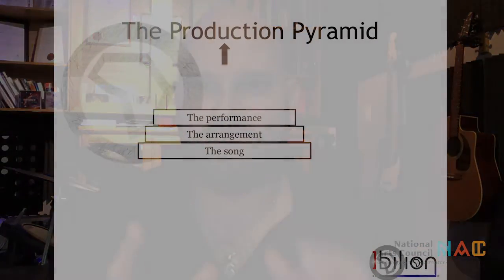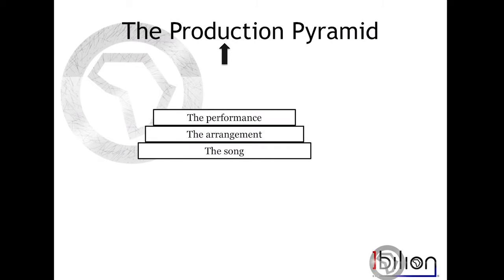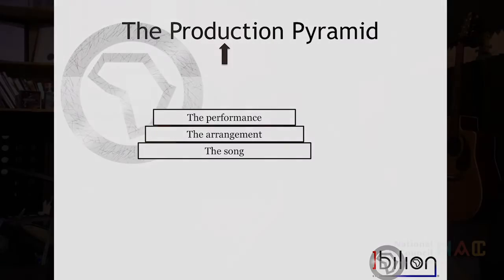How you dress up the song influences how people receive it. Different styles can mean different things — for example, you can have a hip-hop song redone as a heavy metal song, and that change is often in the arrangement. But it's not enough just to know what each instrument will play; it's about who plays those instruments — the performer and the performance. The song needs to be brilliant, the arrangement needs to be amazing, and the performance needs to be absolutely incredible.